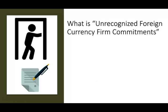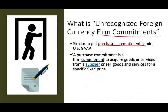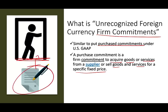So what is an unrecognized foreign currency firm commitment? Let's break it down. If you're familiar with purchase commitment under US GAAP, basically it's the same thing — it's a purchase commitment. A purchase commitment is when the company has a commitment to acquire or buy goods or services from a supplier, or sell goods or services for a specific fixed price. You signed the contract and you cannot get out of it. Either you are buying something at a fixed price or you are selling something at a fixed price. This is what a commitment is.